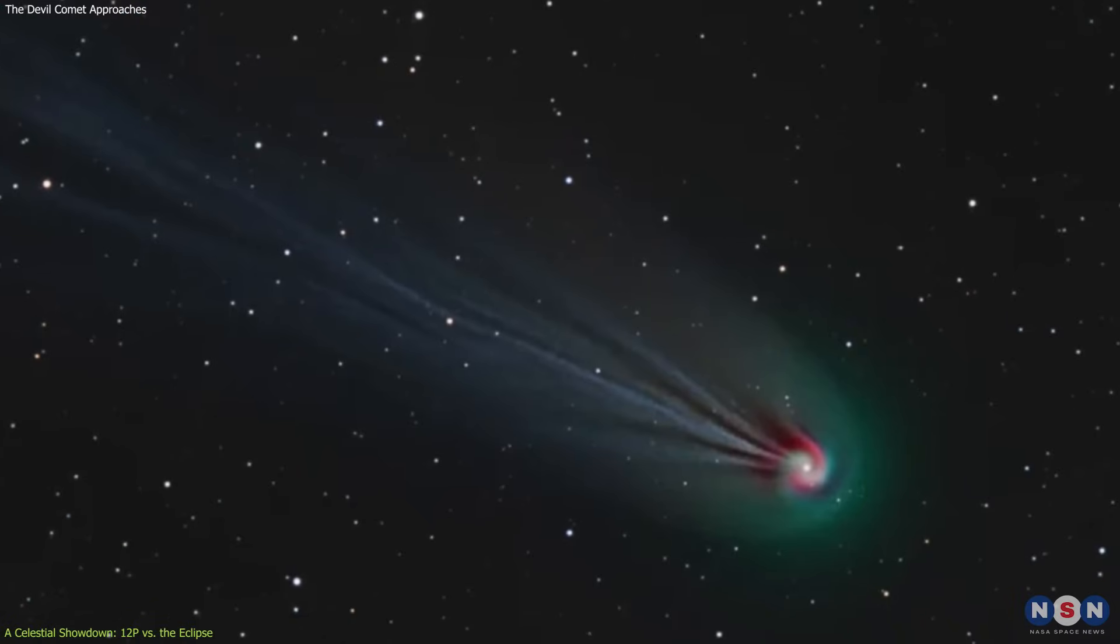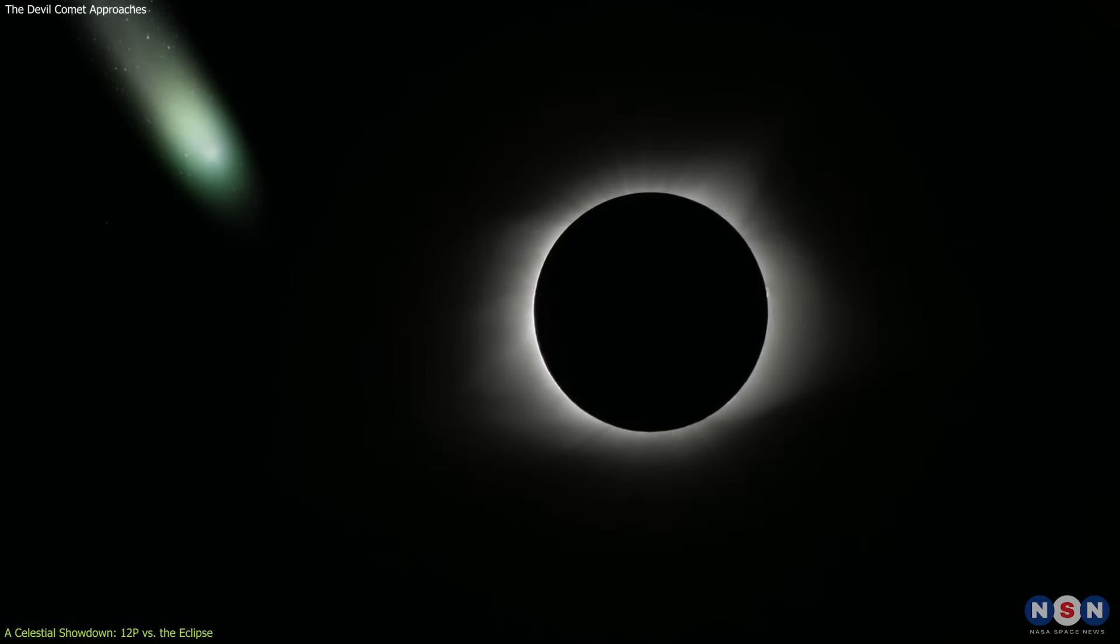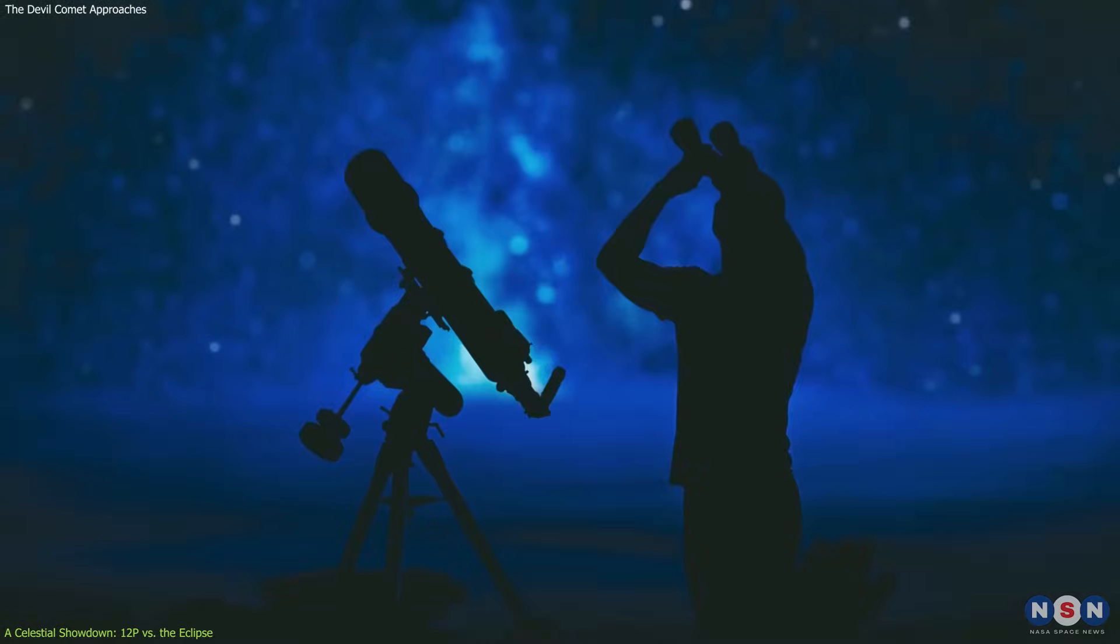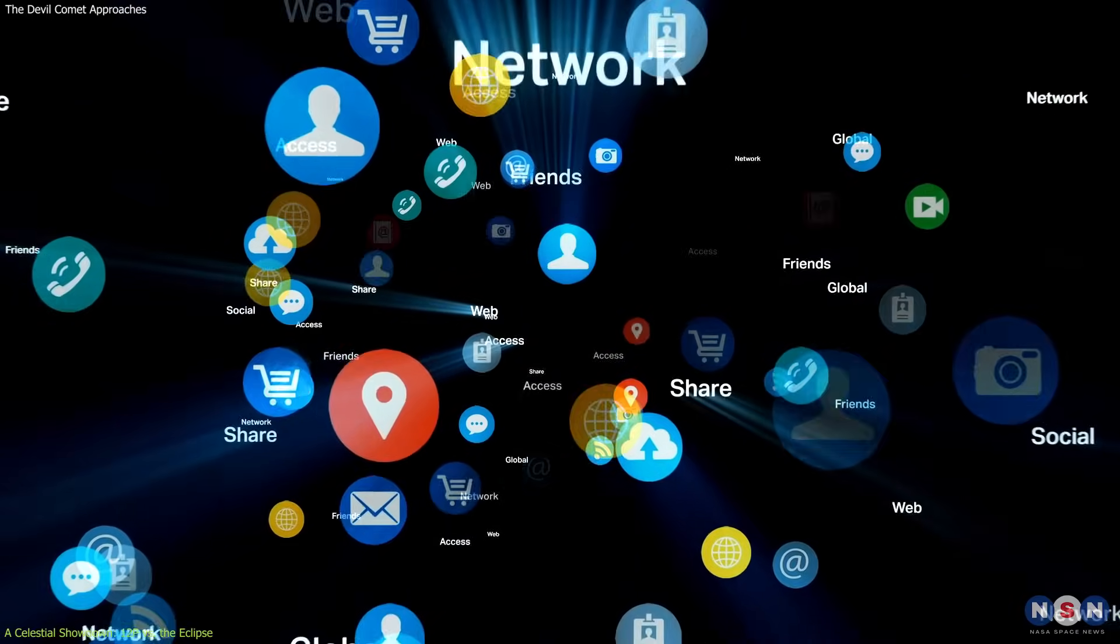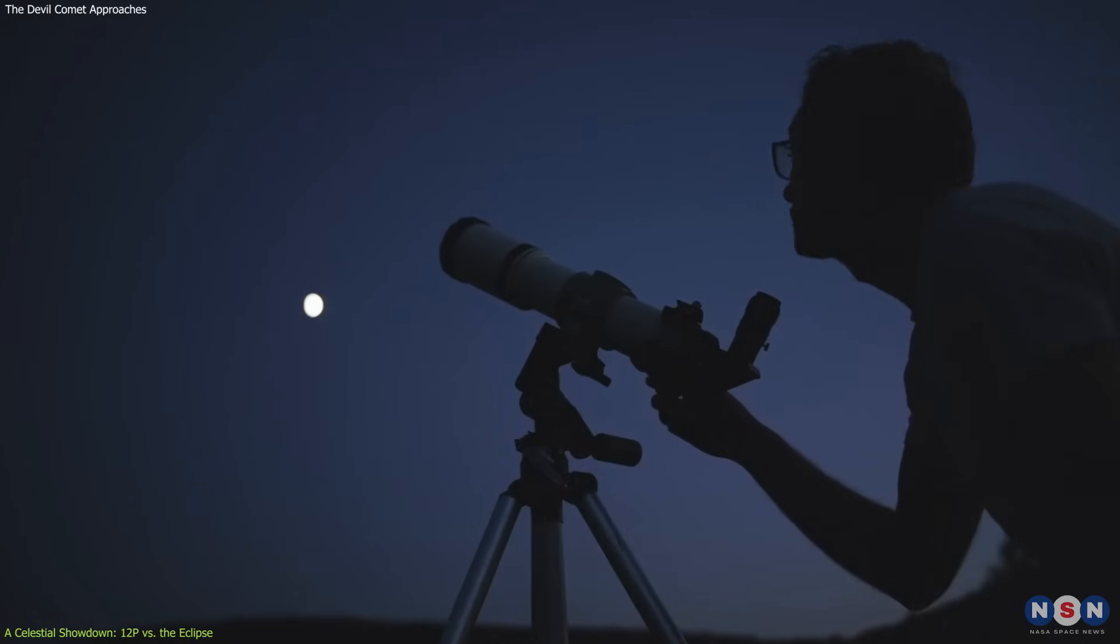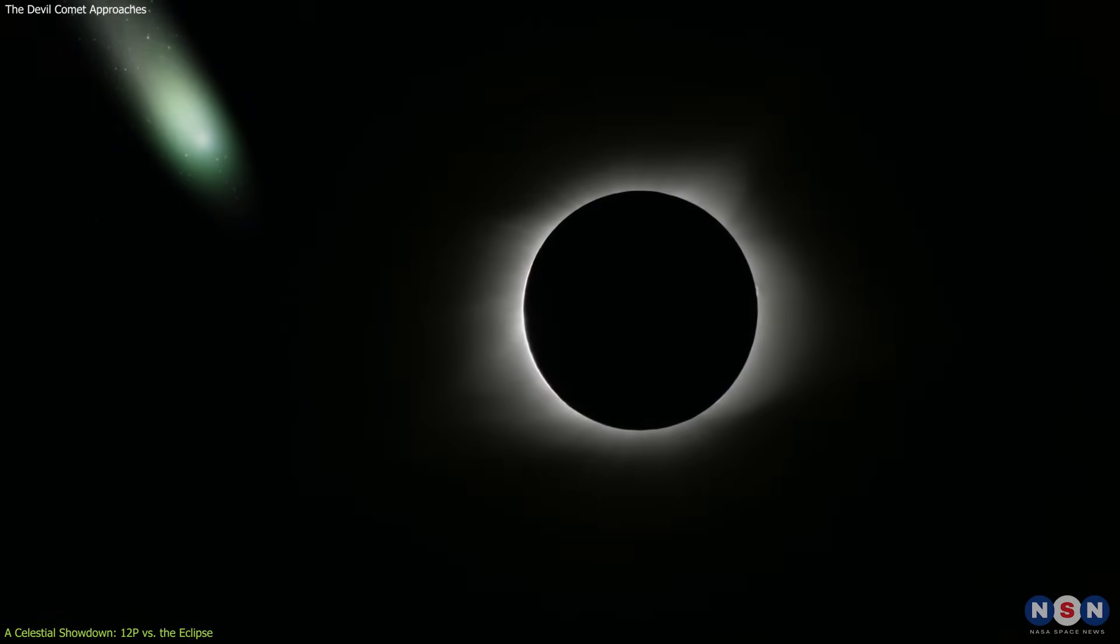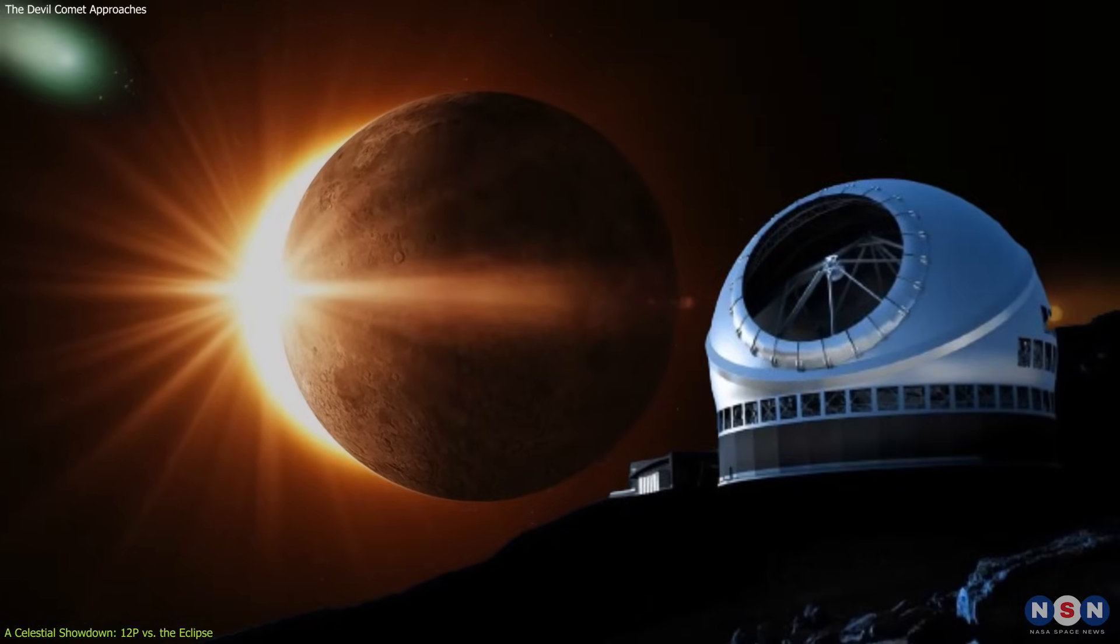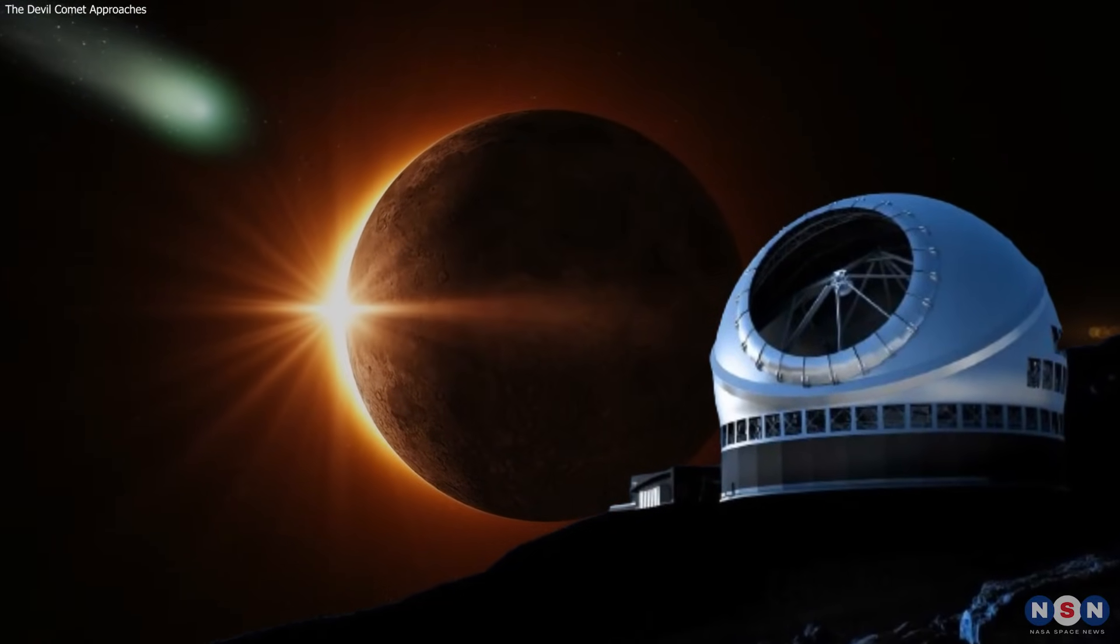The prospect of witnessing comet 12P Pons-Brooks during the total solar eclipse has captivated the astronomical community and stargazers worldwide. Social media platforms and astronomy forums are buzzing with speculation and excitement. Amateur astronomers are planning their observation strategies, hoping to capture this rare event. Meanwhile, professional observatories are gearing up for a comprehensive study of the comet's interaction with the eclipse.